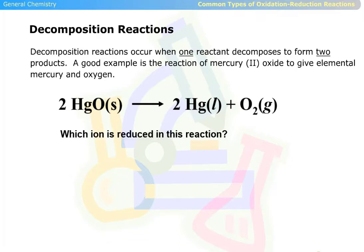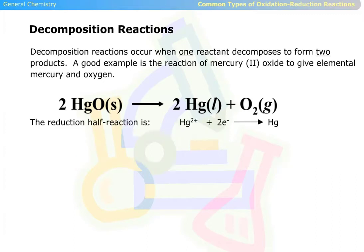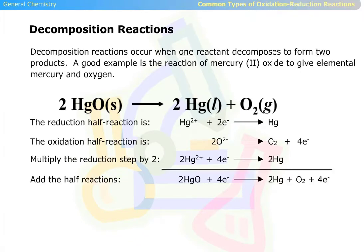Which ion is reduced in this reaction? Mercury 2 plus is reduced — its oxidation number changed from plus 2 to 0. This is the reduction half reaction. This is the oxidation half reaction. We multiply the reduction step by 2, and add the half reactions, and cancel the electrons.